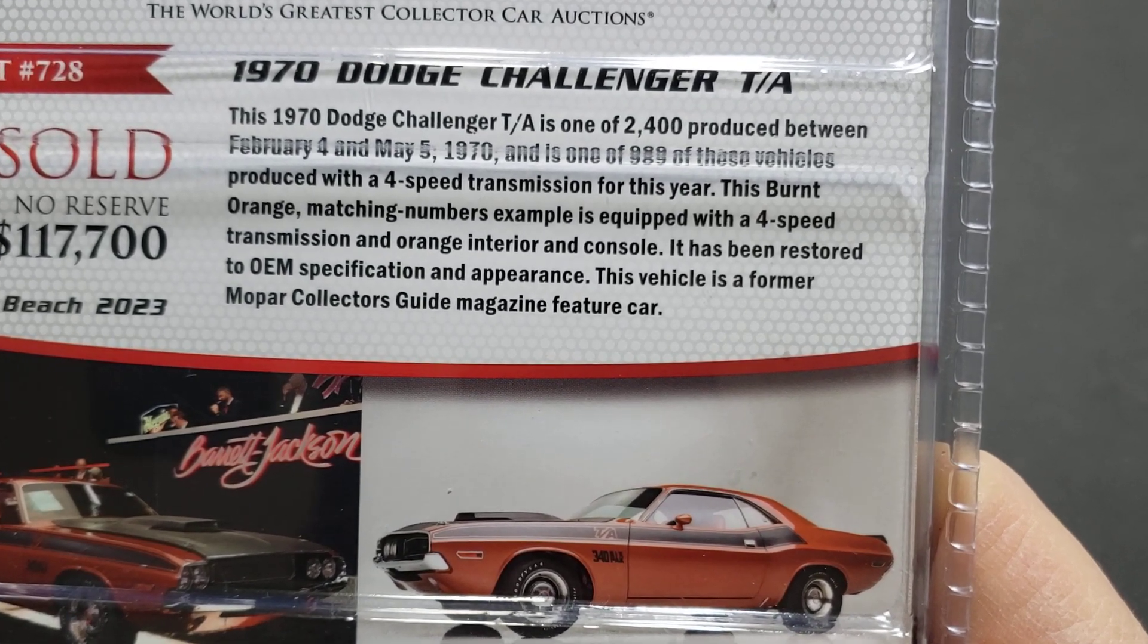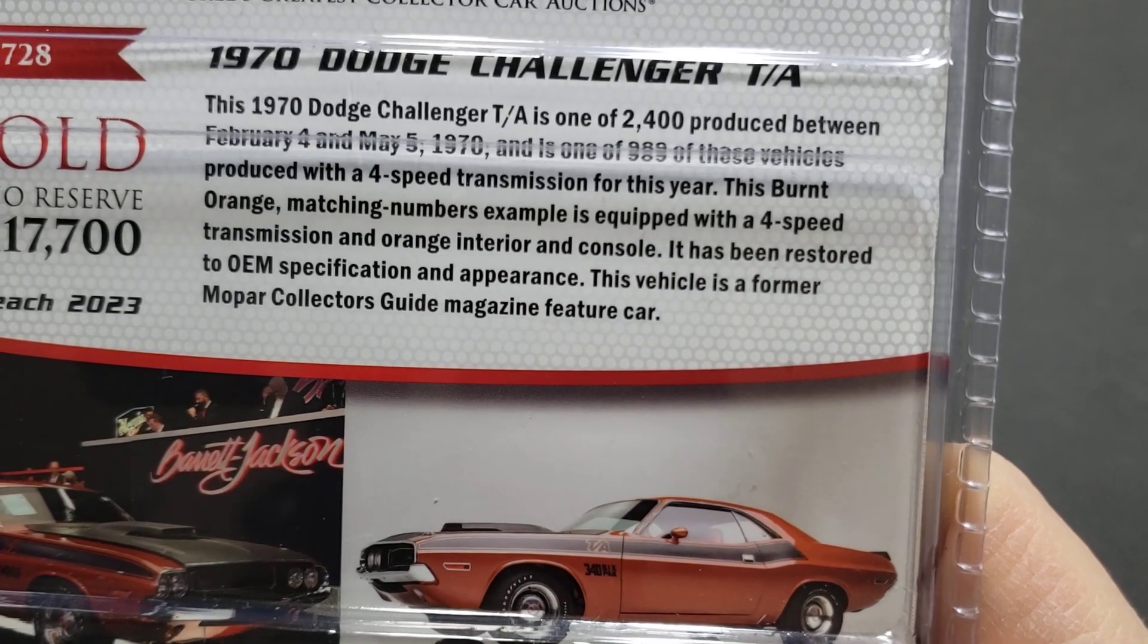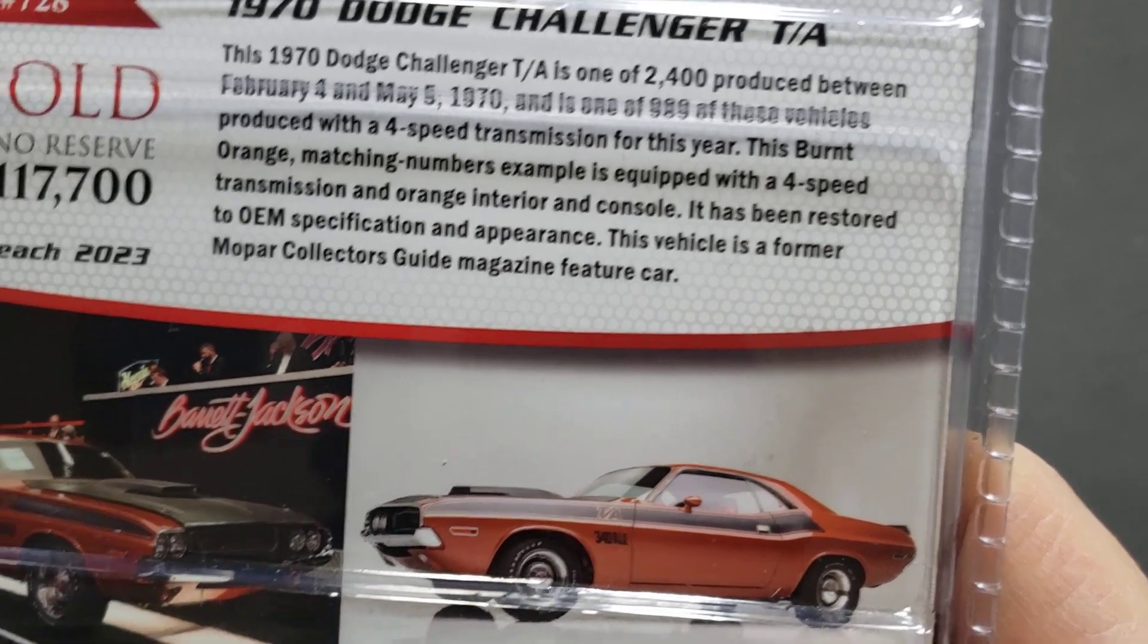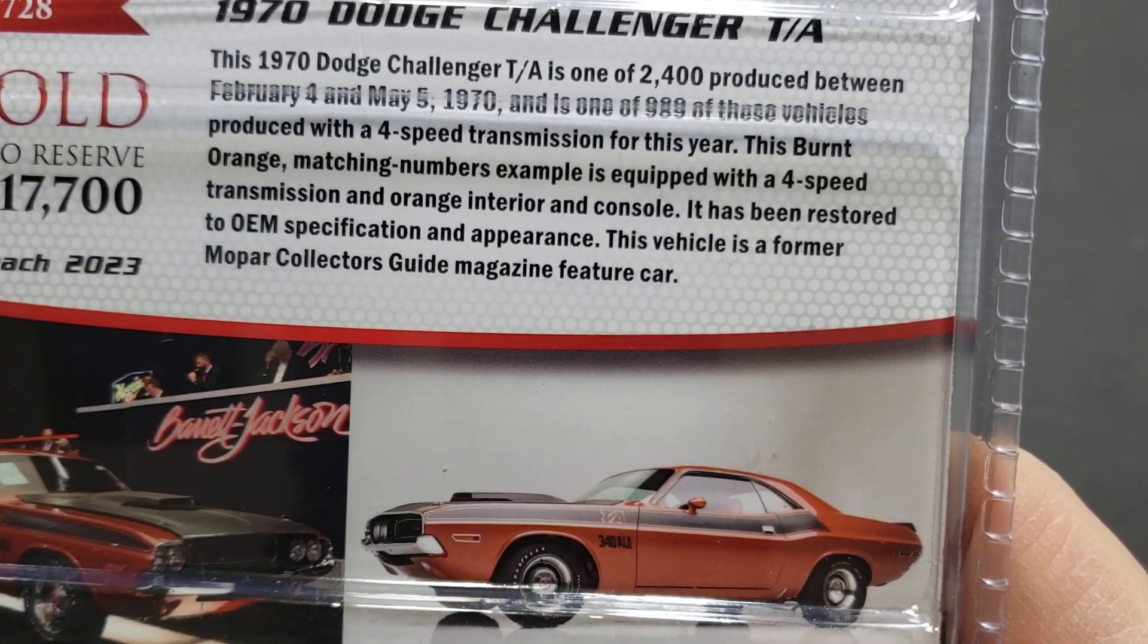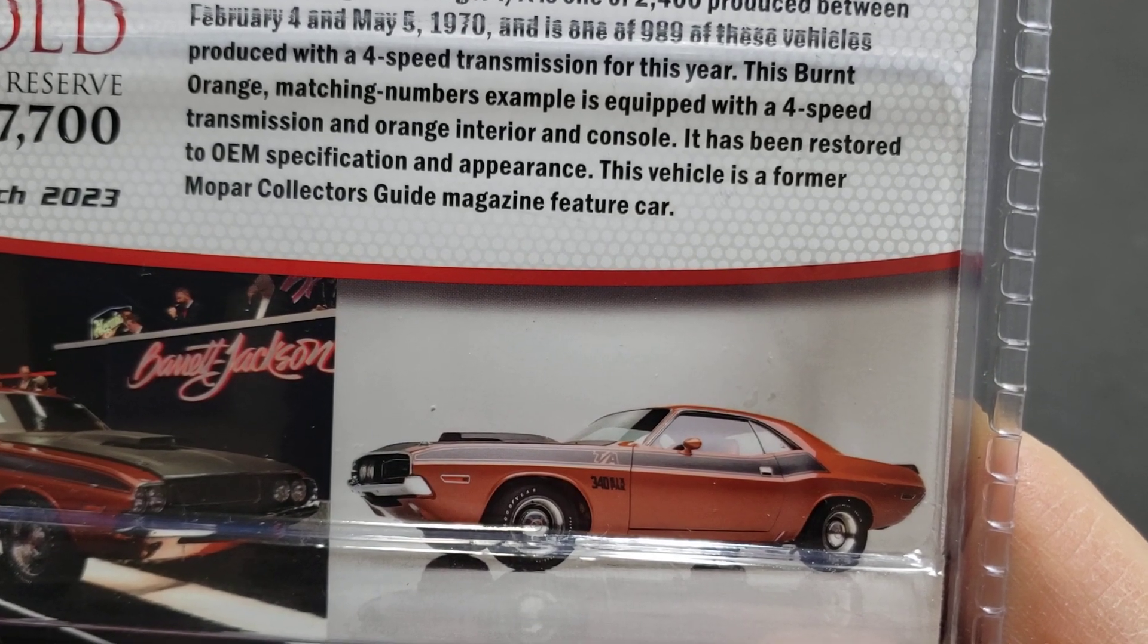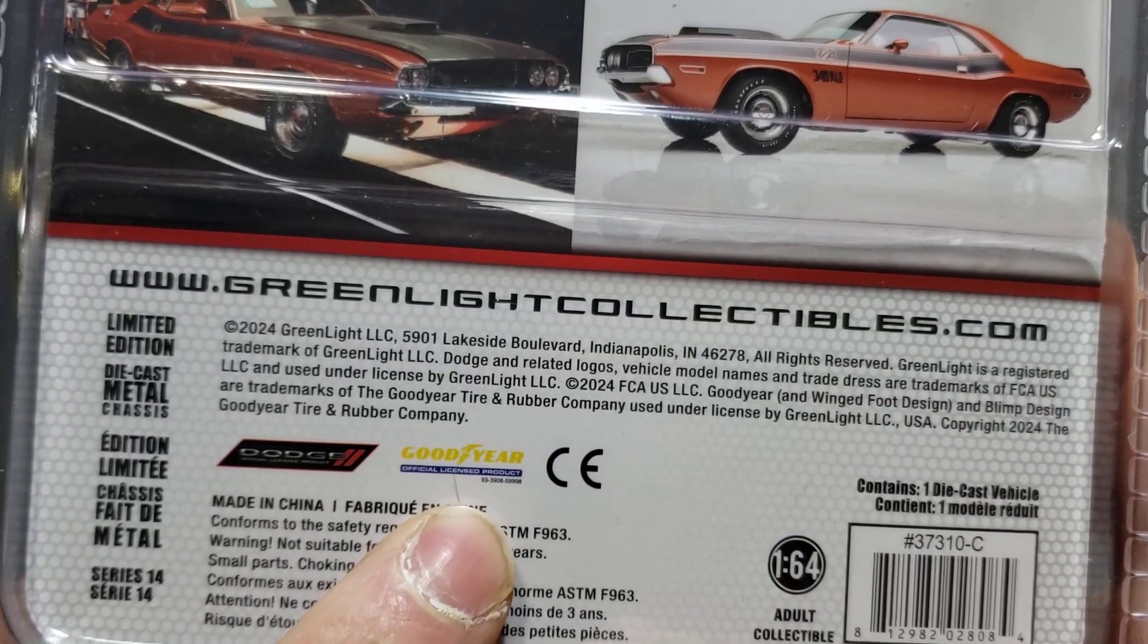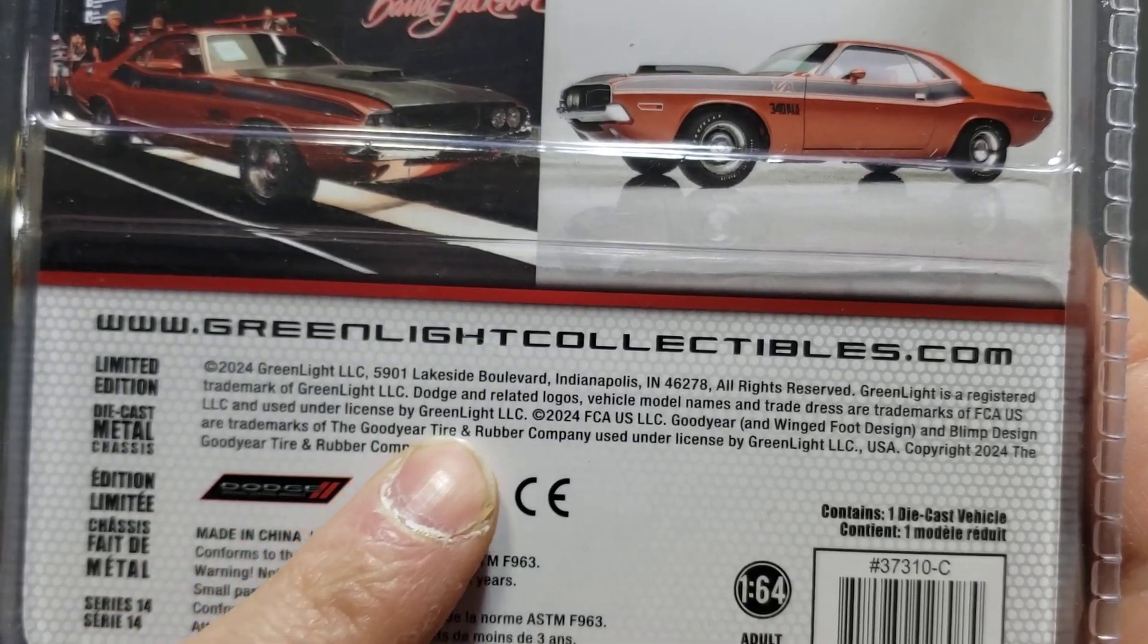1970 Dodge Challenger TA is one of 2400 produced between February 4th and May 5th 1970, and it's one of 989 of these vehicles produced with a 4-speed transmission for this year. This burnt orange, matching numbers example, equipped with a 4-speed transmission, which we already know, they could have just added other details. Orange interior and console has been restored to OEM specifications and appearance, and is a former Mopar collector's guide magazine feature car. In addition to the information we have up there is the Goodyear tires you can see there, and Dodge which is a part of FCA.